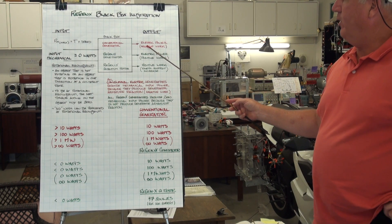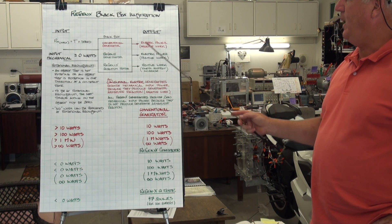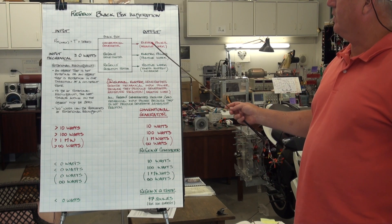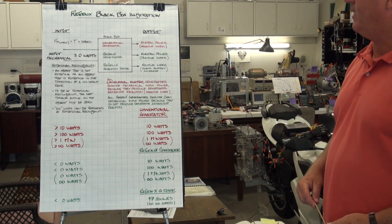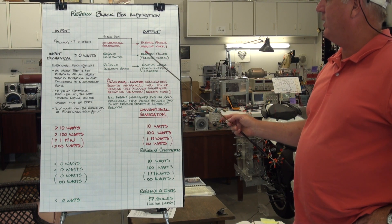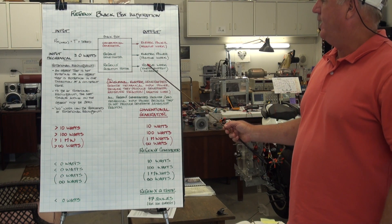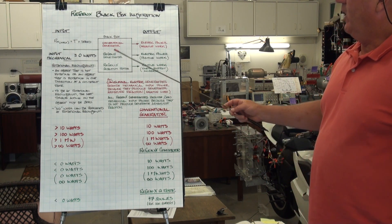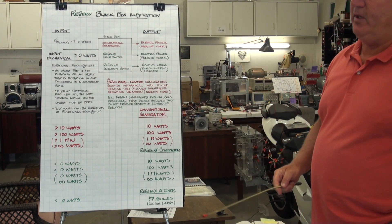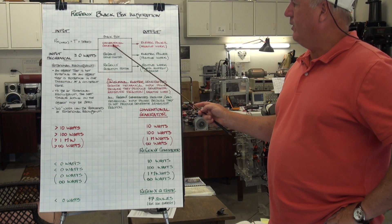For the conventional generator, the output is electric output power and also negative work. Negative work is not factored into generator efficiency calculations. For the RegenX generator, the output is electric output power and positive work. And the RegenX Quantum Motor's output is positive work. So the input to all of our generators and quantum motor is mechanical power in the drive shaft.